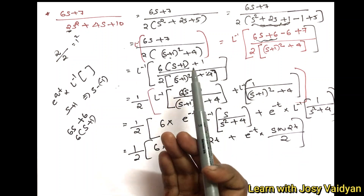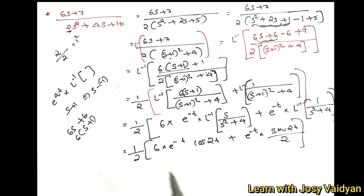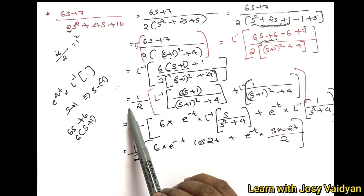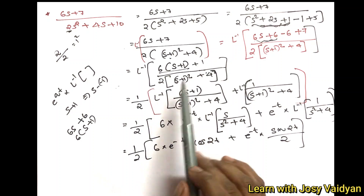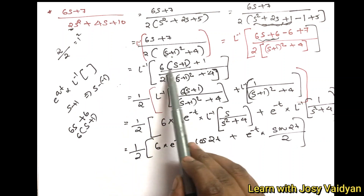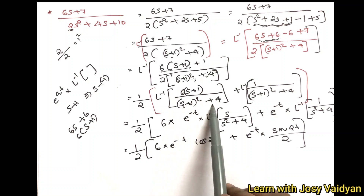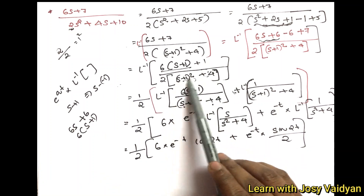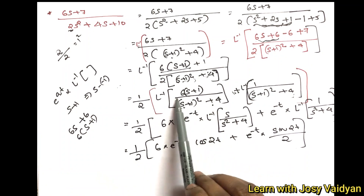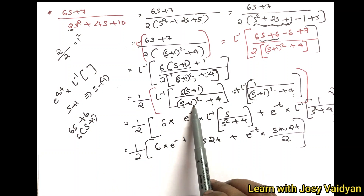We factor out 1 by 2 from the denominator. Now we split into two terms: 6 into s plus 1 divided by s plus 1 the whole square plus 4, and 1 divided by s plus 1 the whole square plus 4. The constant 6 is outside the first term and the second term has no extra constant.